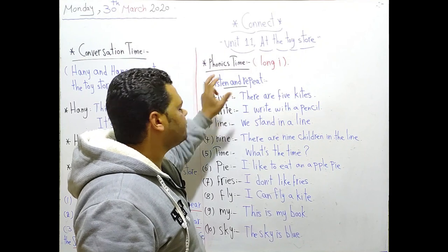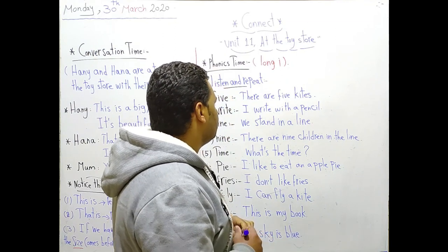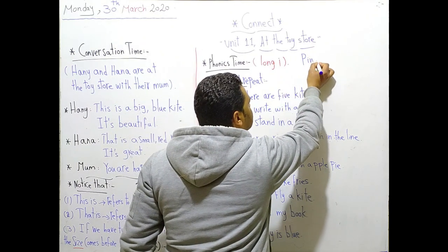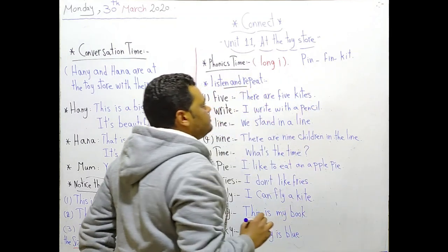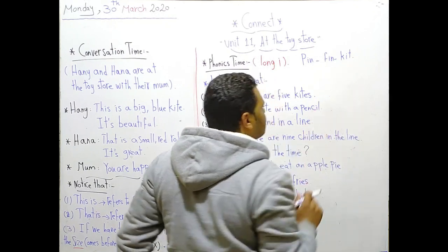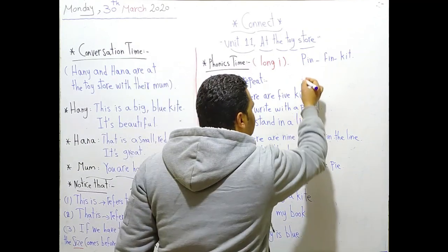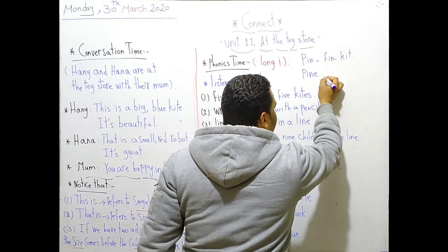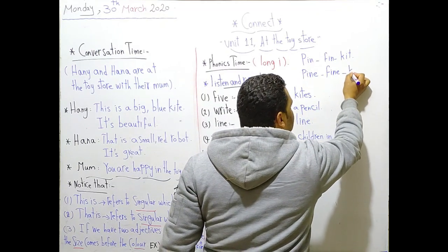Now it's time for some phonics. We will identify long I. But let me illustrate for you something first. Look at these words. We have pin, fin, and cat. Listen: pin, fin, cat. But what will happen if we add the letter E to each word? Pin will be pine, fin will be fine, and cat will be kite.